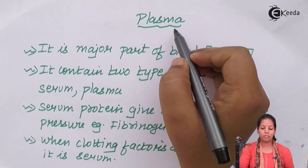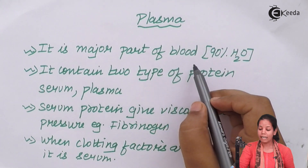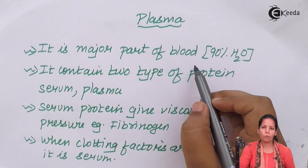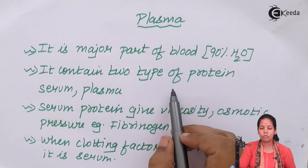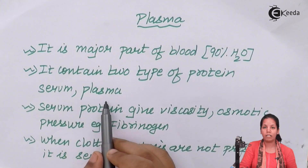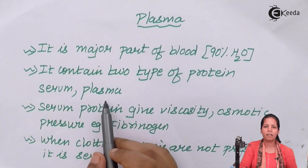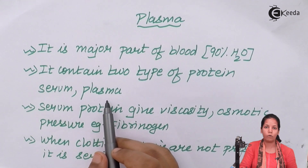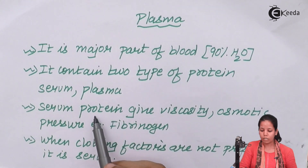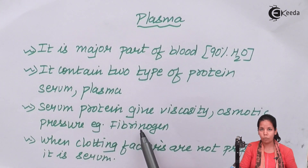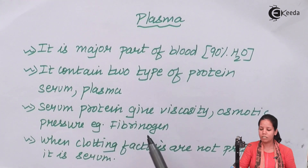Plasma accounts for 50% of total blood. 90% of it is pure water. It has two kinds of proteins: serum and plasma proteins. Whenever blood is given for sampling or testing — for detection of antibodies or certain antigens — technicians separate serum and plasma to make results more accurate. It is only the difference of coagulating factors that separates them.